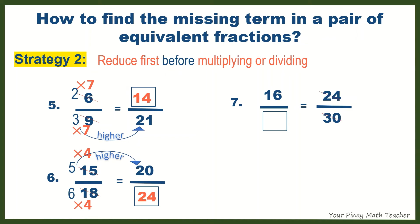Number 7: 24 over 30 can also be reduced, but this time by 6. 24 divided by 6 is 4. 30 divided by 6 is 5. 4 gets higher to 16, so we have to multiply 4 by 4 to get 16 and do the same with 5. So the missing term in number 7 is 20.